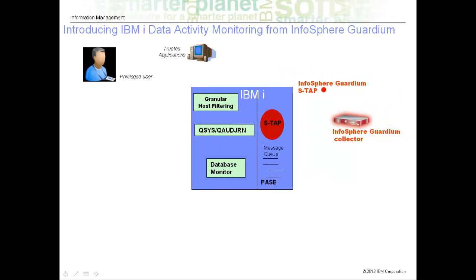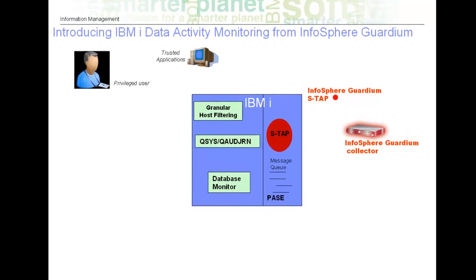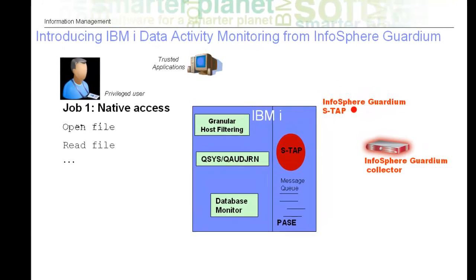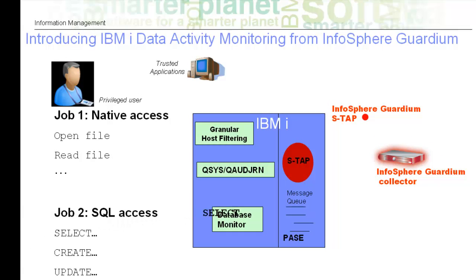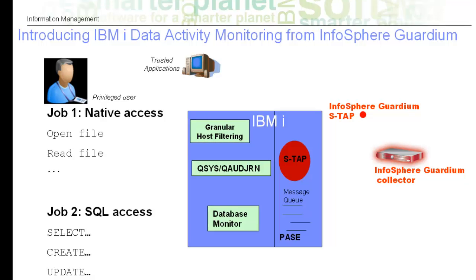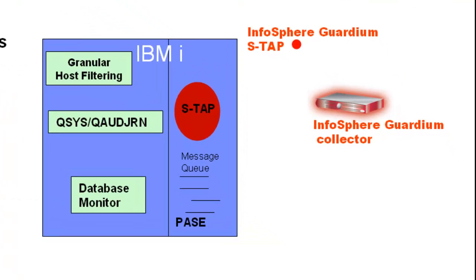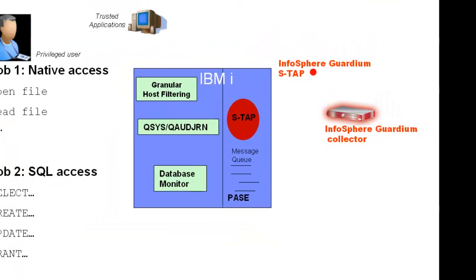Guardian data activity monitoring for IBM i is a fundamentally new and integrated solution that overcomes these shortcomings. When auditing is activated, activity messages from native and SQL access are passed to a software TAP, known as an STAP, that runs in the IBM i Portable Application Solutions Environment. The STAP then sends those auditing messages over TCP to a hardened Guardian appliance.